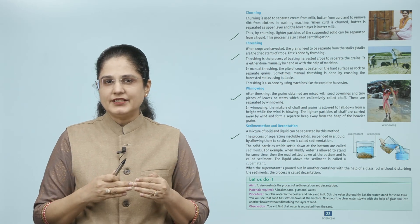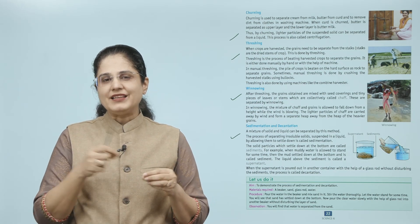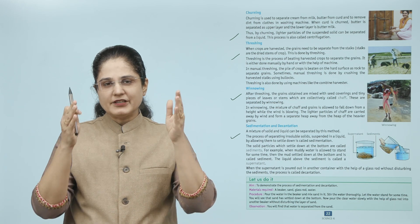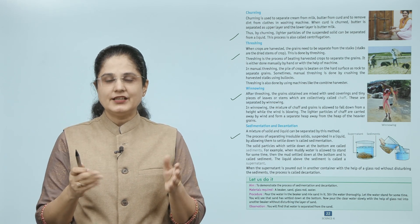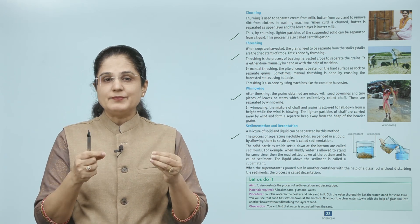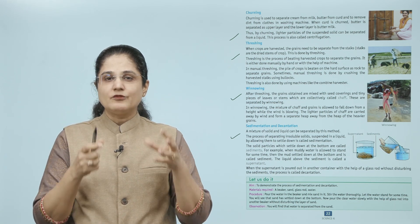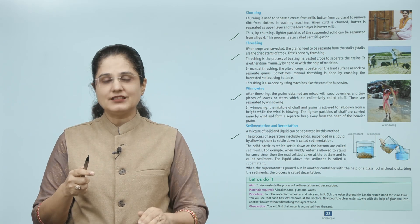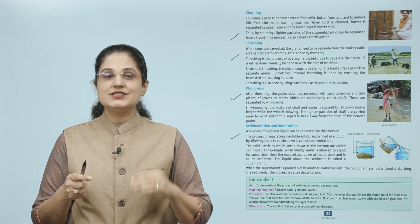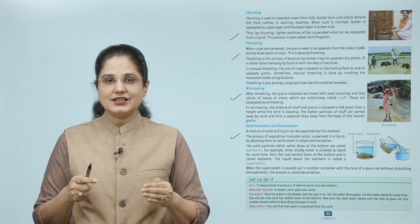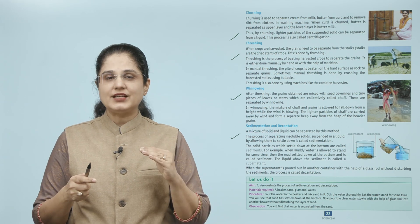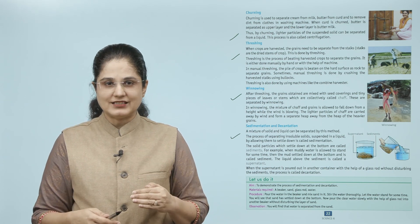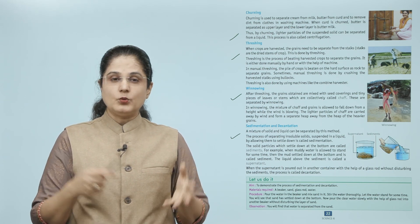Sedimentation ke process mein ek solid aur liquid ka mixture hota hai. Jo insoluble solid hai woh paani mein suspended hota hai. Jab aap is mixture ko thodi dair ke liye chhod dete hain, to jo solid particles hain woh heavy hone ki wajah se neeche settle ho jaate hain — unhein sediment kaha jaata hai. Uske oopar clear liquid aa jaata hai jise supernatant kaha jaata hai.